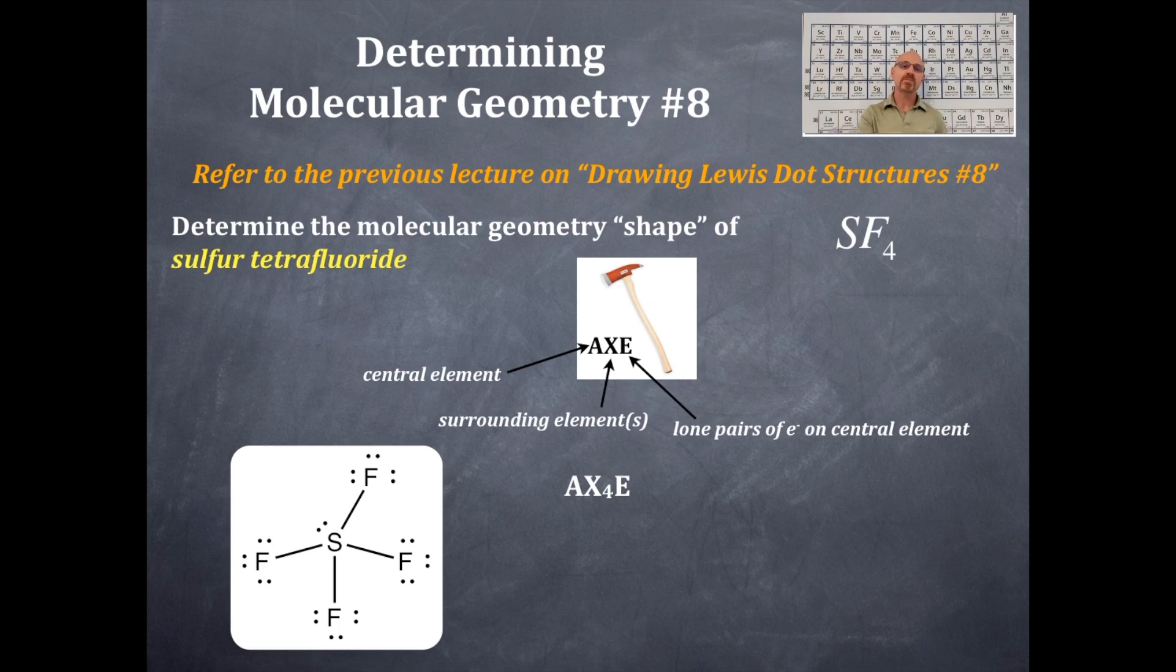However, we're going to rip off one of those domains and put a pair of non-bonding electrons on it. And that tells us what that shape is.